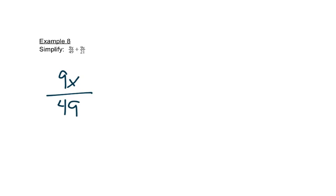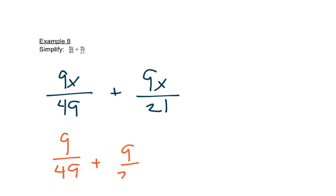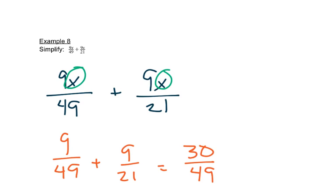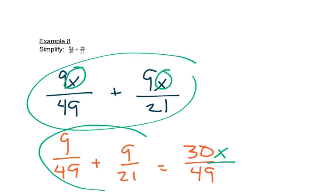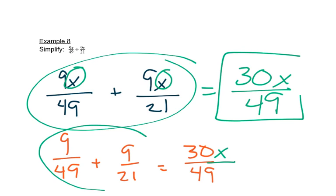Let's look at one more. In this problem we have an x in the numerator, but that doesn't change a lot. Treating it as nine over forty-nine plus nine over twenty-one, we use our calculator: nine, fraction button, forty-nine, plus nine, fraction button, twenty-one. The calculator tells us it's thirty over forty-nine. Since both nines had an x, they were like terms we could add together — meaning the answer also has an x. So the only difference is we put the x beside the thirty, giving us thirty x over forty-nine.